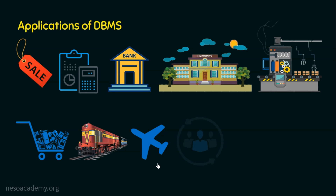Coming to the next application area, which is HR — human resources. Any organization will certainly have employees, so employee details, salary details, payroll information, tax information, and benefits and goodies information all need to be maintained. That's why human resources is also one of the application areas of DBMS.